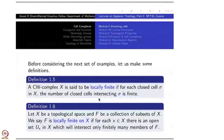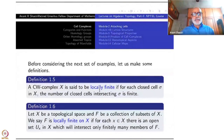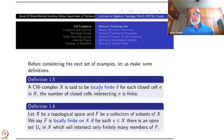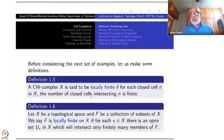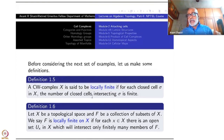Before considering the next set of examples, let us make a few more definitions. A CW complex X is said to be locally finite if, for each closed cell sigma — the closure of a cell — the number of closed cells intersecting sigma in X must be finite. For example, take a vertex and look at all 1-cells which have that vertex as one of their vertices; that must be finite.